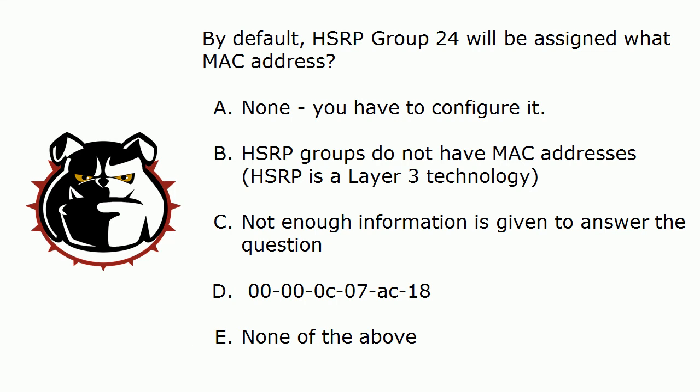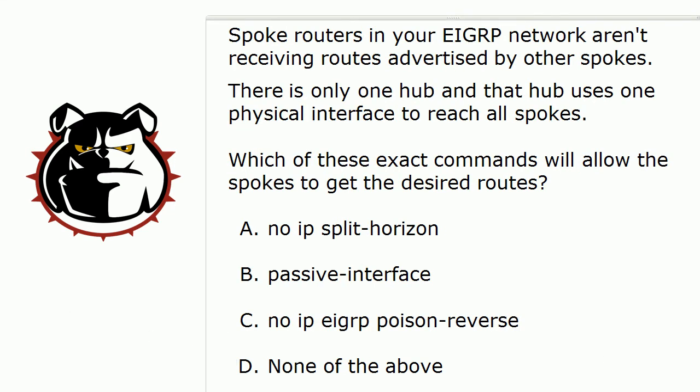Now, let's have a good old-fashioned troubleshooting question. This is a classic — you've probably seen this in a lab. Spoke routers in your EIGRP network are not receiving routes advertised by other spokes. There's only one hub, and that hub uses only one physical interface to reach all the spokes. Which of these exact commands will allow the spokes to get the desired results? A: no ip split-horizon. B: passive-interface. C: no ip eigrp poison-reverse. D: None of the above.